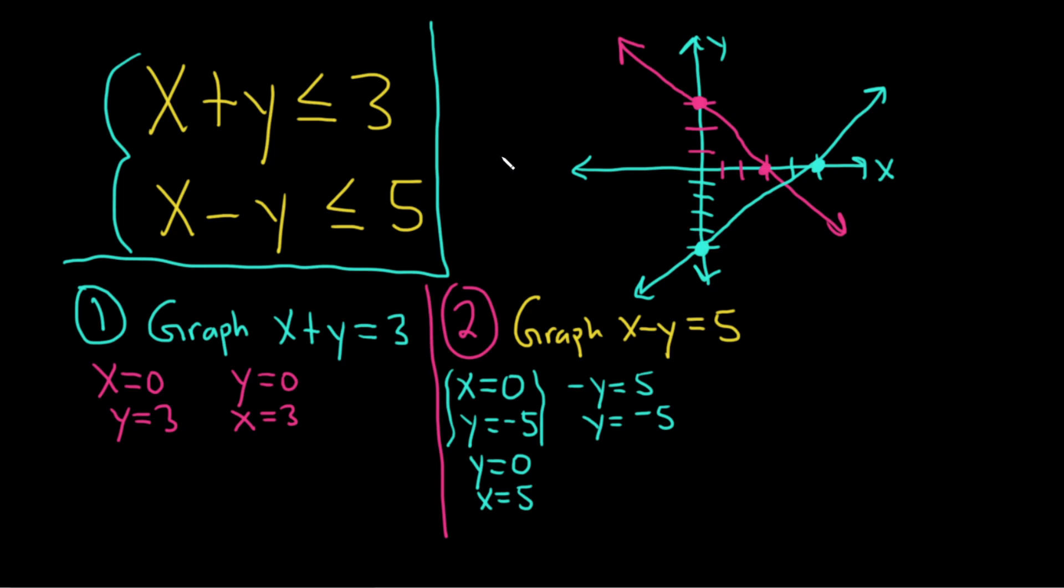So in order to do the shading, we should pick test points. And there's other ways of doing this, by the way. I thought of another way once I started the problem, but let's just go through this method because this method will always work. We need to pick test points. So let's pick a test point. The easiest point we can pick is zero, zero. So let's go ahead and test our first inequality.